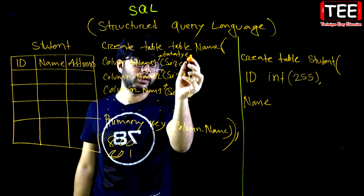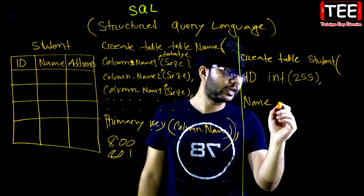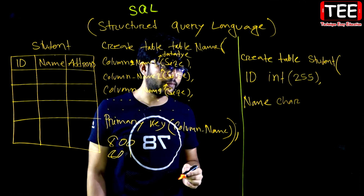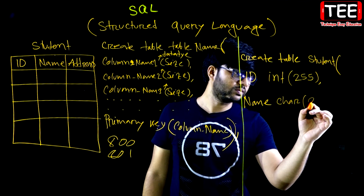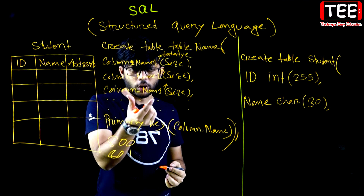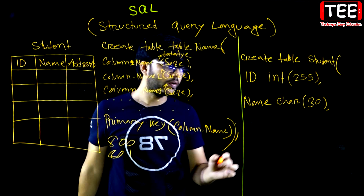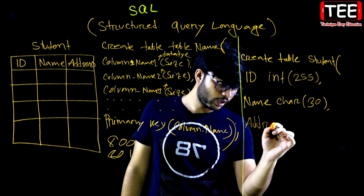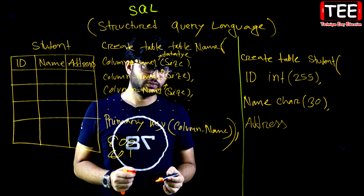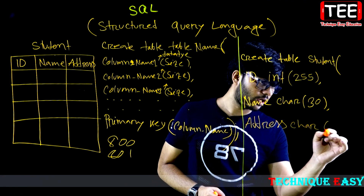The size is 30. Column name 3 — again column name 3 — address. Character type. Address — character, character — we have to choose a different size.